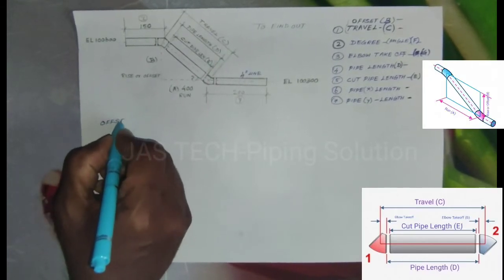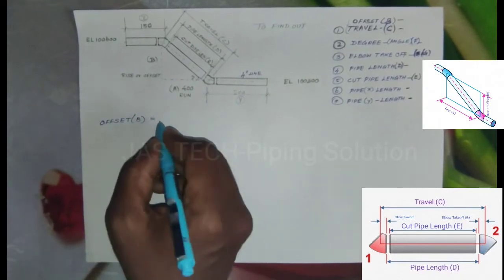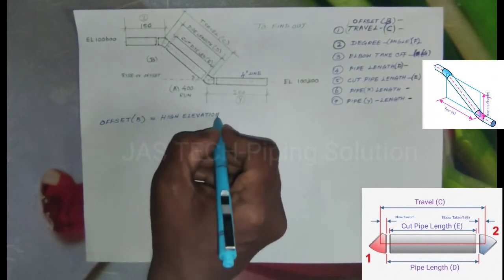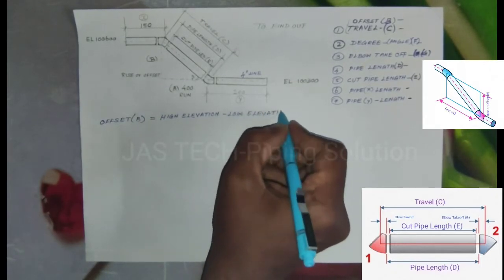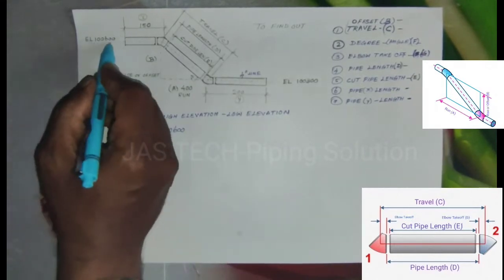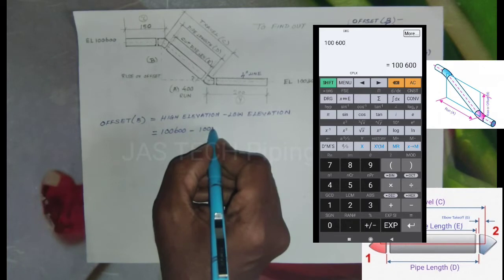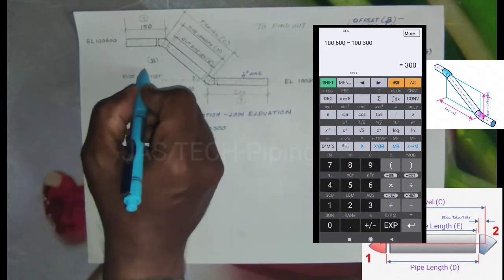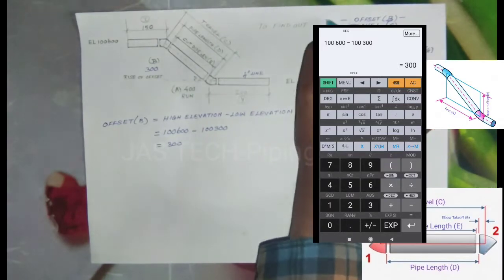First one, to find out Offset. Offset B equals High Elevation minus Low Elevation. Here, High Elevation is 100,600, so 100,600 minus 100,300 equals 300 millimeters. The Offset result is 300 millimeters.